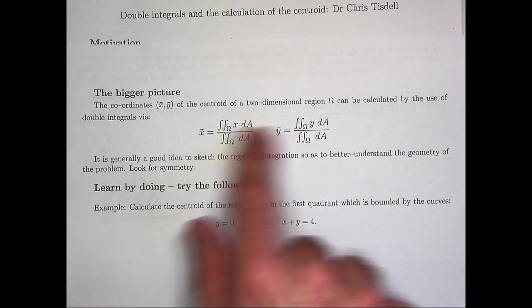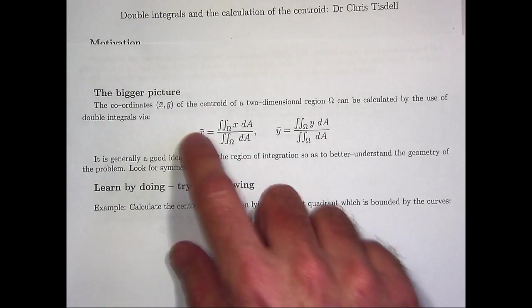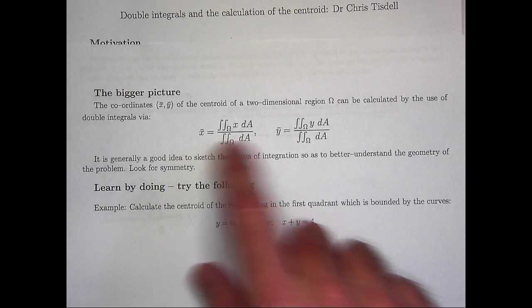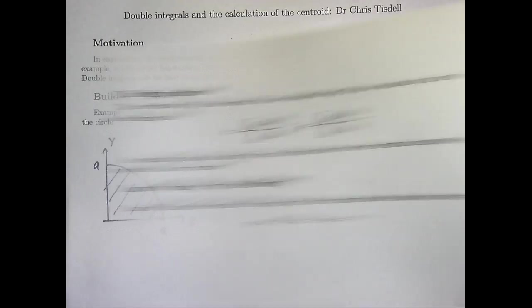OK, so you can see we've got some double integrals for those coordinates. So x-bar, y-bar would be the coordinates of our centroid.